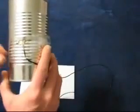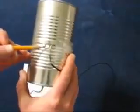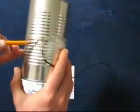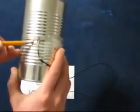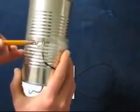Next, you want to stick that through the hole in the can. Now, you want to solder the shield, the braided shield conductor, to the side of the can.